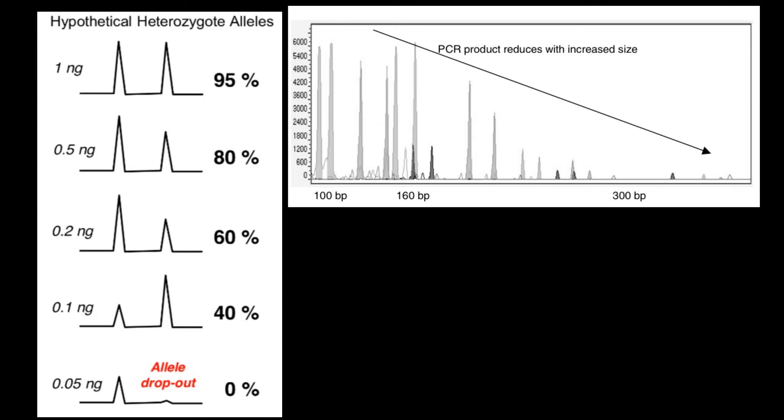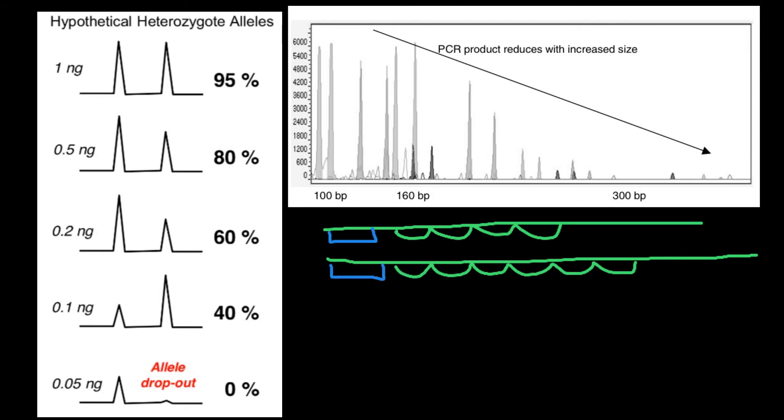And another mechanism would be, imagine now that we have template DNA here. Here's another template DNA. Here we have one, two, three, four repeats. Here we have one, two, three, four, five, six repeats. And let's say that here we would have primer one, primer two. And basically what we see for this locus, we see that this locus is heterozygous with different numbers of repeats. And this is what we see here.